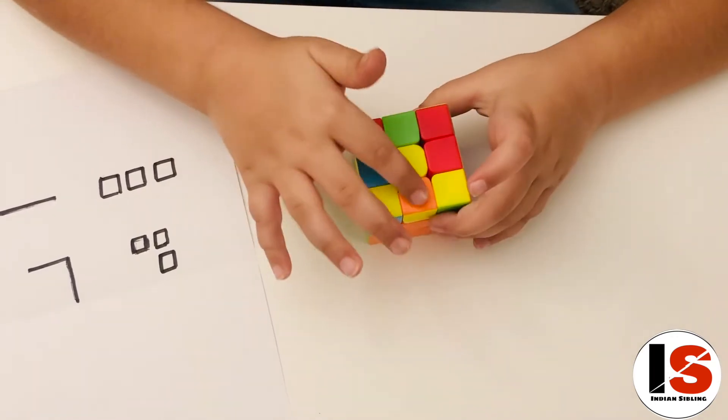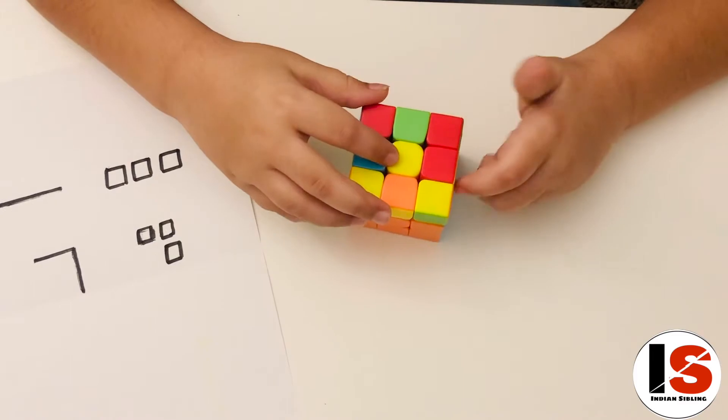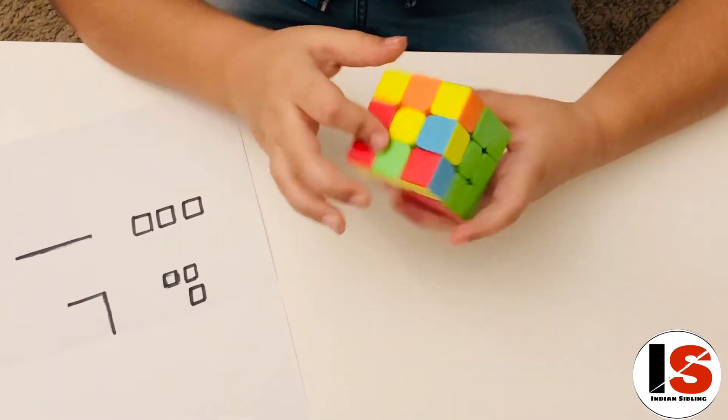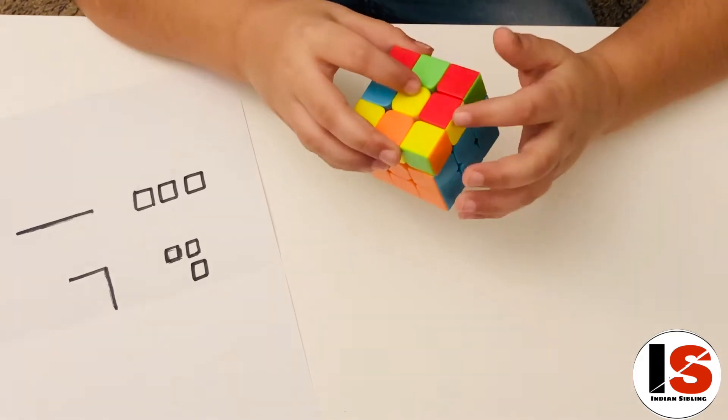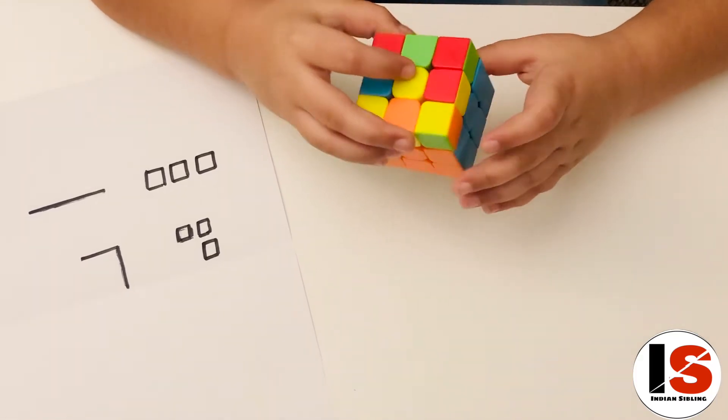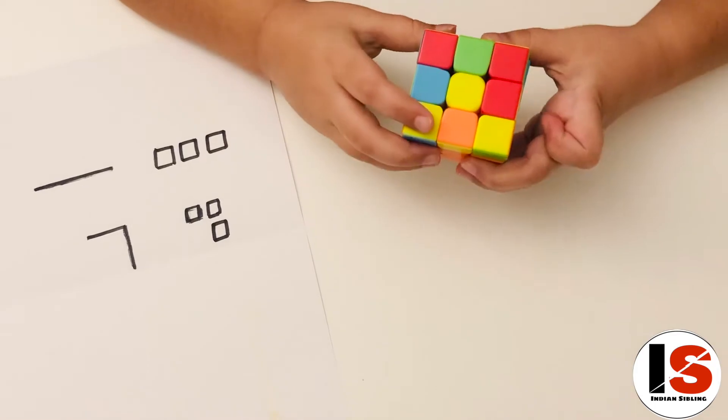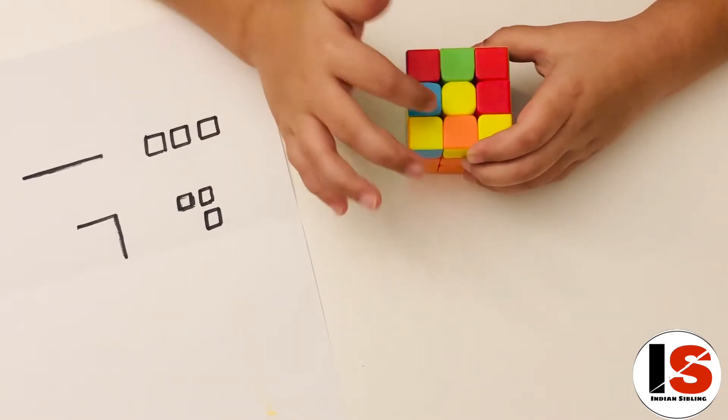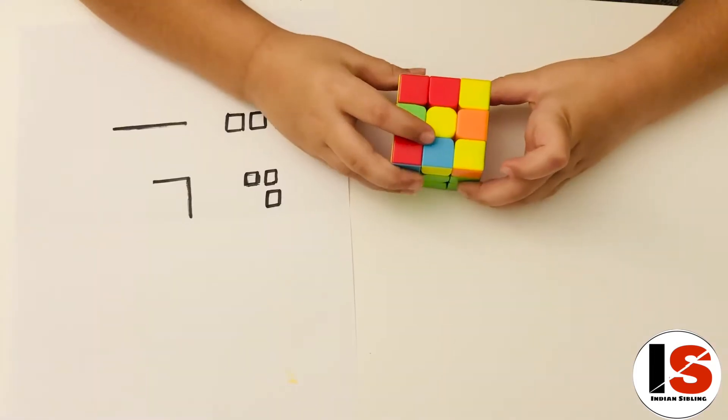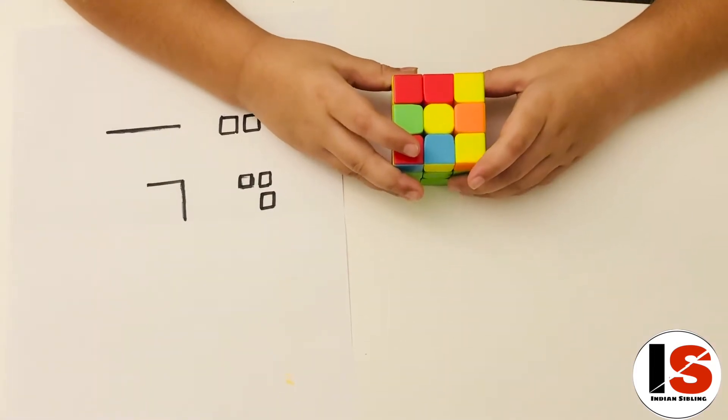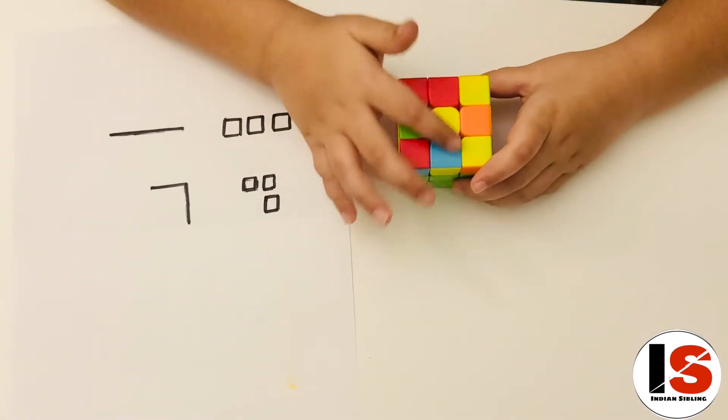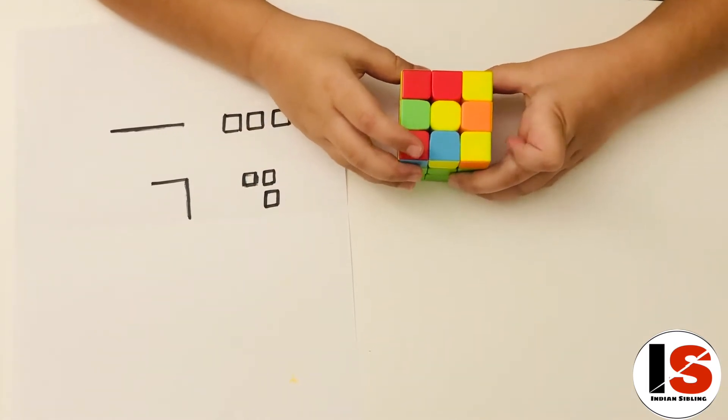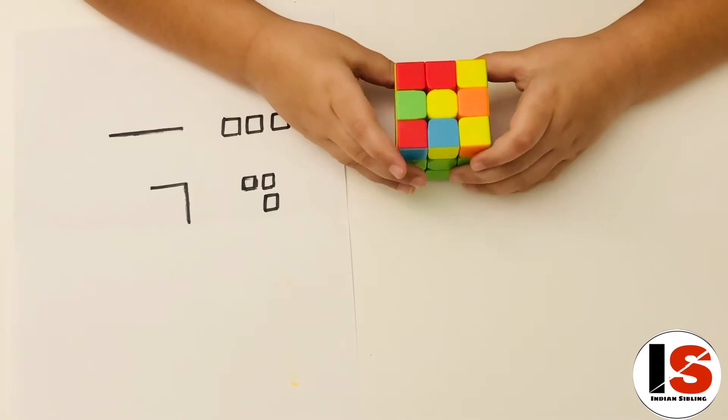Our first step of solving the third layer is to make a cross of yellow with the colors aligned on the center middle. Now in order to solve this, if you have the spot you can hold it in any direction. Your cube can be in one of three states: you can have a reverse L, you can have a horizontal line, or you can already have a plus if you get lucky.